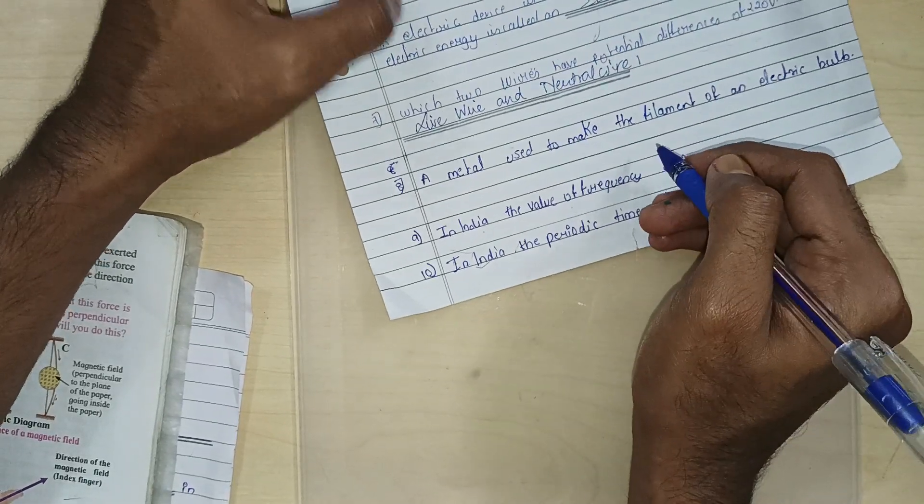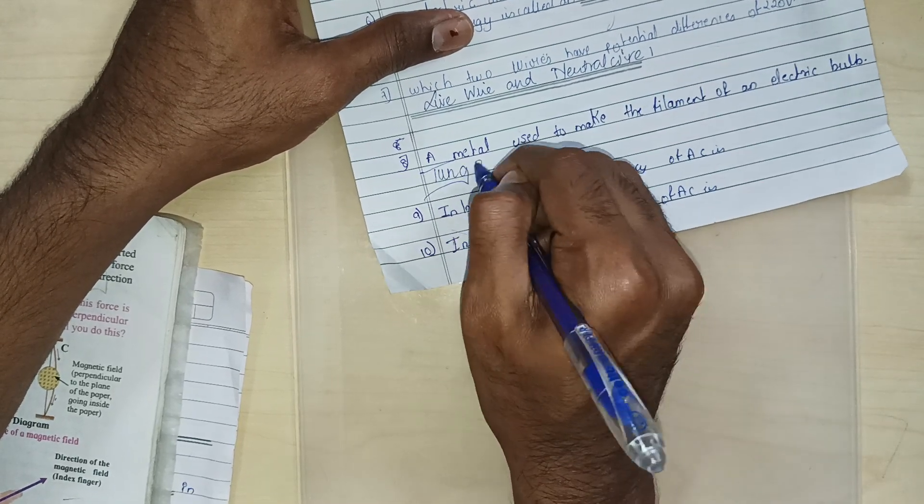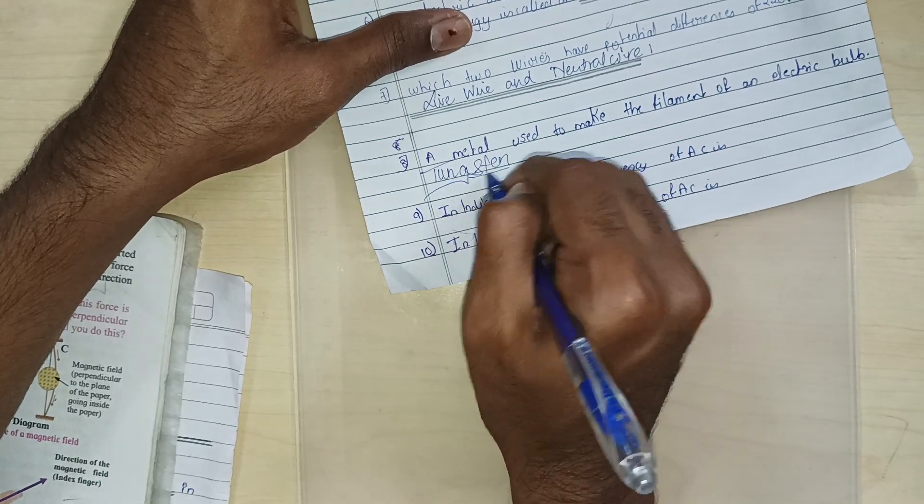A metal used to make the filament of electric bulb. Which metal is it? Tungsten. Tungsten. The bulb is made of tungsten, right? Inside the bulb.